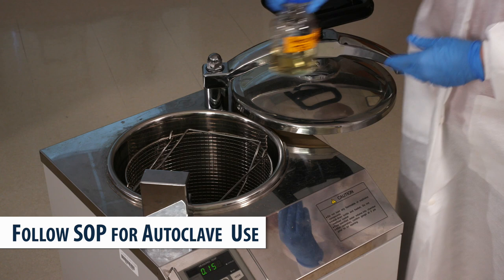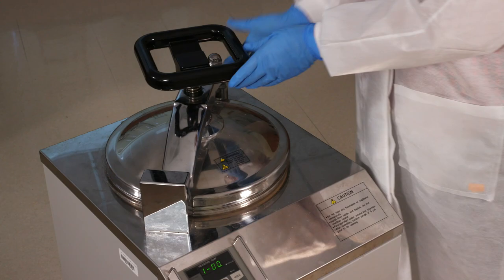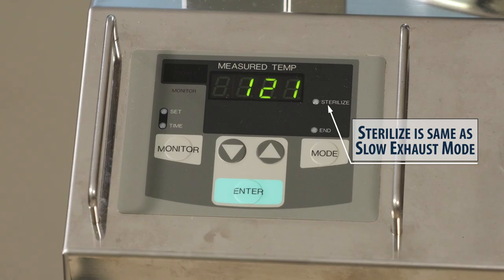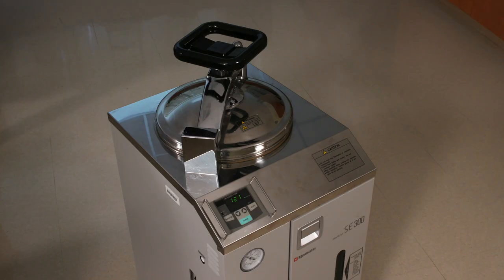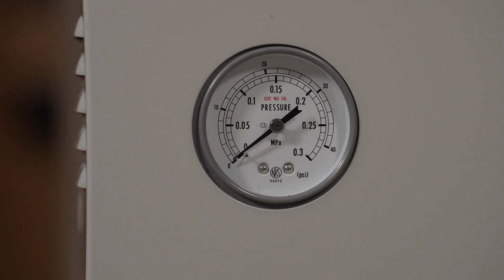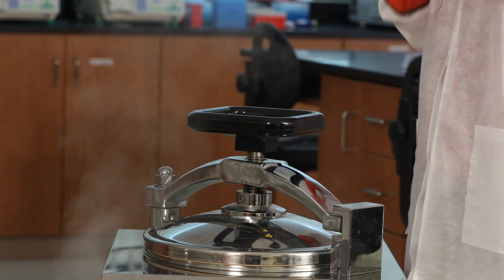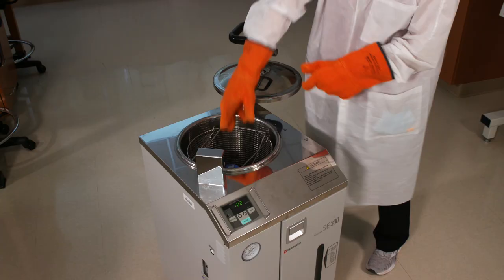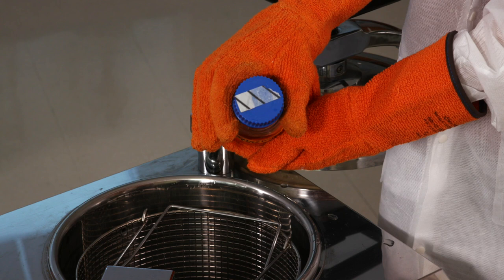Most autoclaves work similarly, but be sure to follow the SOP for the specific unit in your lab. Select Slow Exhaust Mode. It's labeled Sterilize on this unit. Now we'll wait for the cycle to complete, and for the pressure gauge to read zero. Use heat-resistant gloves and stand to the side to open the autoclave.